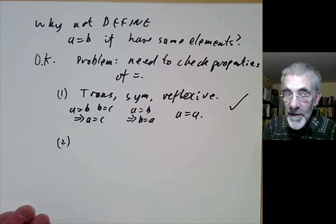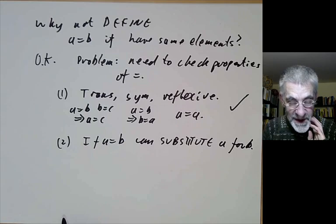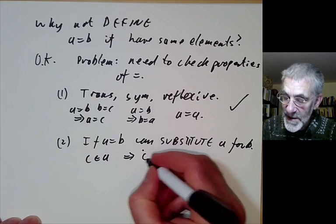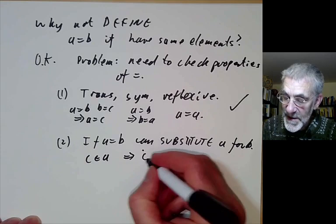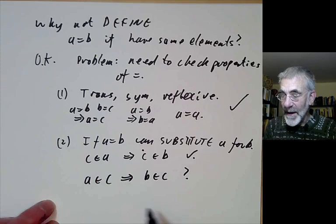Well, the other property of equality means that if A equals B, we can substitute A for B. And again, there are some cases where this is okay. So if C is in A, then we can substitute A and B. So this implies that C is in B. So that's also okay. But there's another version of this we want. We want to say that if A is in C, then B is in C.